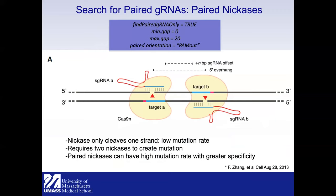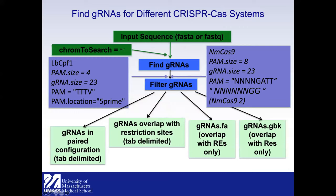If you want a paired guide configuration, all you need to do is set find-paired-guide to TRUE and specify the minimum gap and paired orientation. Different types of pairing conditions can be set — for example, for dCas9 focal dimers. If you are working with CPF1, you need to change the PAM size to 4, guide size to 23, PAM sequence from NGG to TTUA, and PAM location from 3-prime to 5-prime.